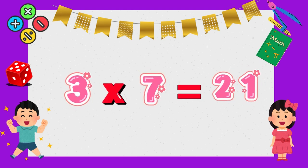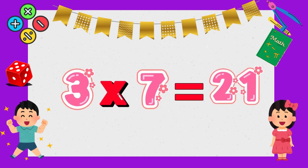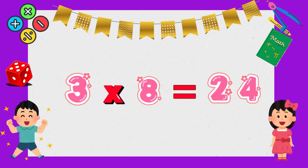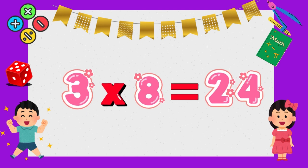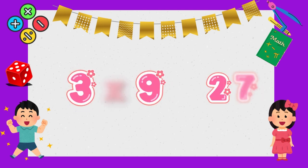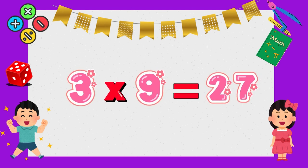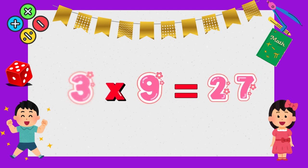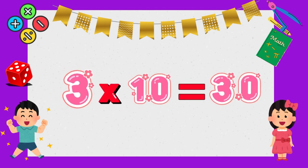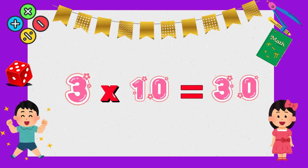3 times 7 is 21. 3 times 8 is 24. 3 times 9 is 27. Three times ten is thirty.